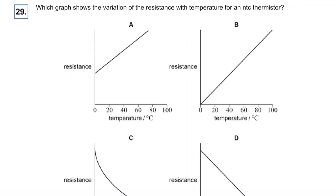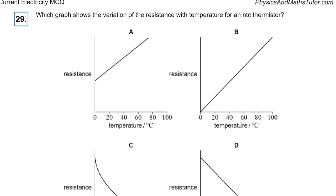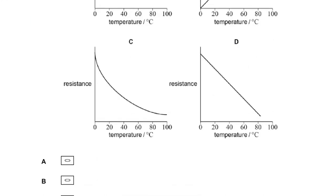Question twenty-nine: which graph shows variation of resistance with temperature for an NTC thermistor? As temperature goes up, resistance goes down. It doesn't decrease linearly because that would imply resistance reaches zero — it has to be the curved graph. The answer is C.